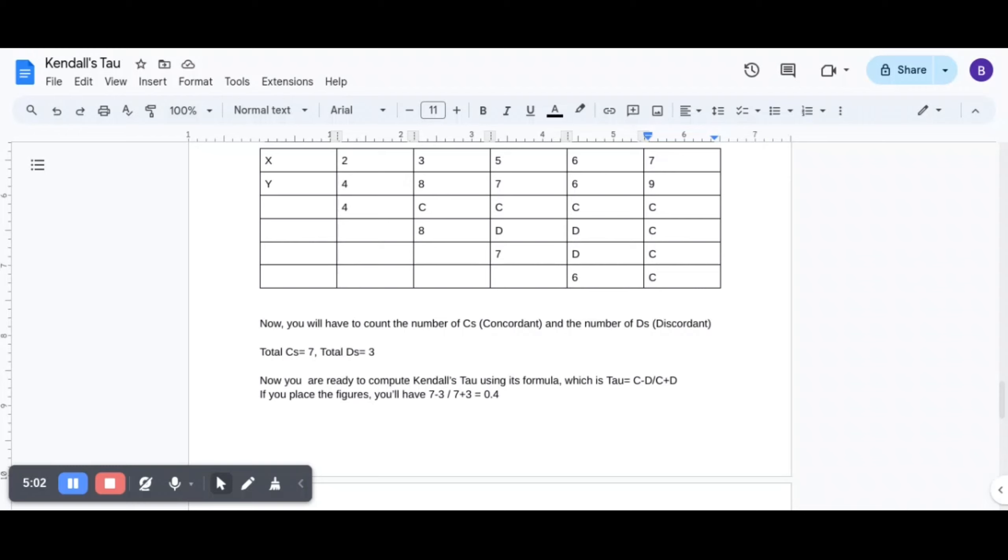So you are all ready to compute Kendall's Tau using this formula. Which is C minus D divided by C plus D. It's the simplest of all that I have learned so far. And sharing with you. Okay? So all you have to do is place these figures. So you have 7 minus 3 divided by 7 plus 3. Which is 0.4.